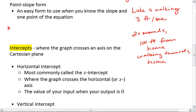From this information, we know m is -3 because it's 3 feet per second, but it's negative because Luke's distance to home is decreasing. We're subtracting 3 feet off the distance every second.